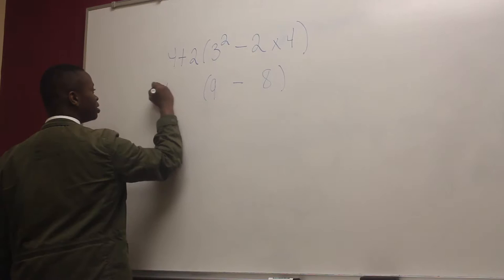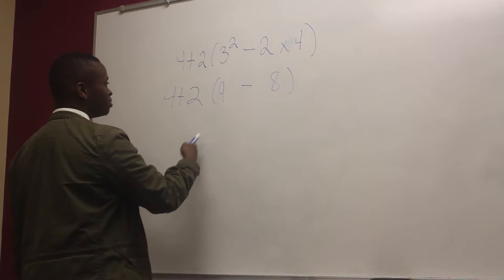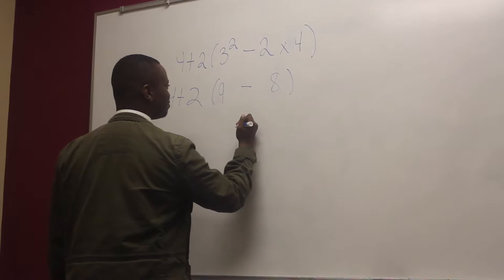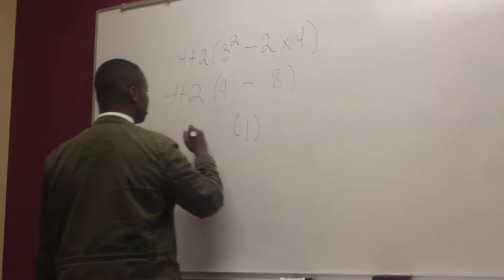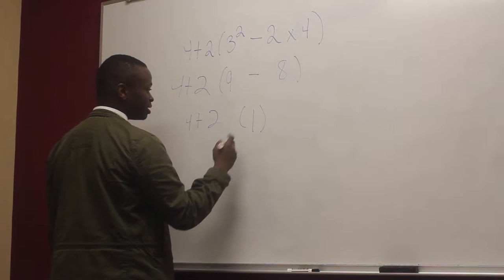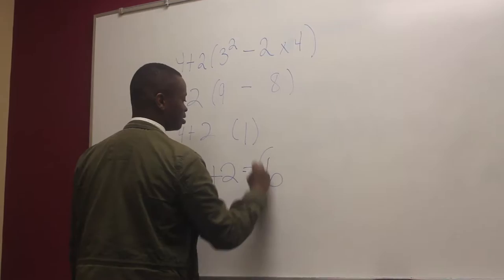So your new equation should look similar to this: four plus two parentheses nine minus eight. You do what you're supposed to do within your parentheses first, which gives you one. So four plus two times one — two times one is two — and four plus two equals six.